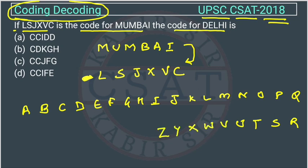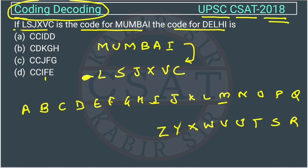Now we will see: M is getting converted into L. M is here, and M is getting converted into L. L is before M, so we are going one step backward — that's why minus 1, at the first position.